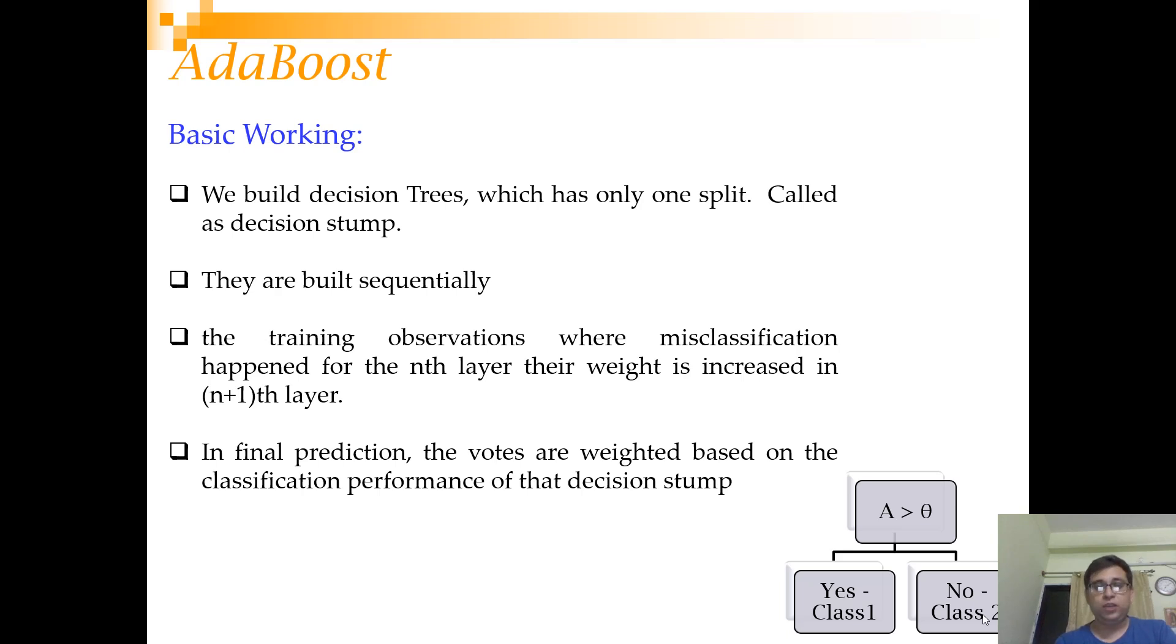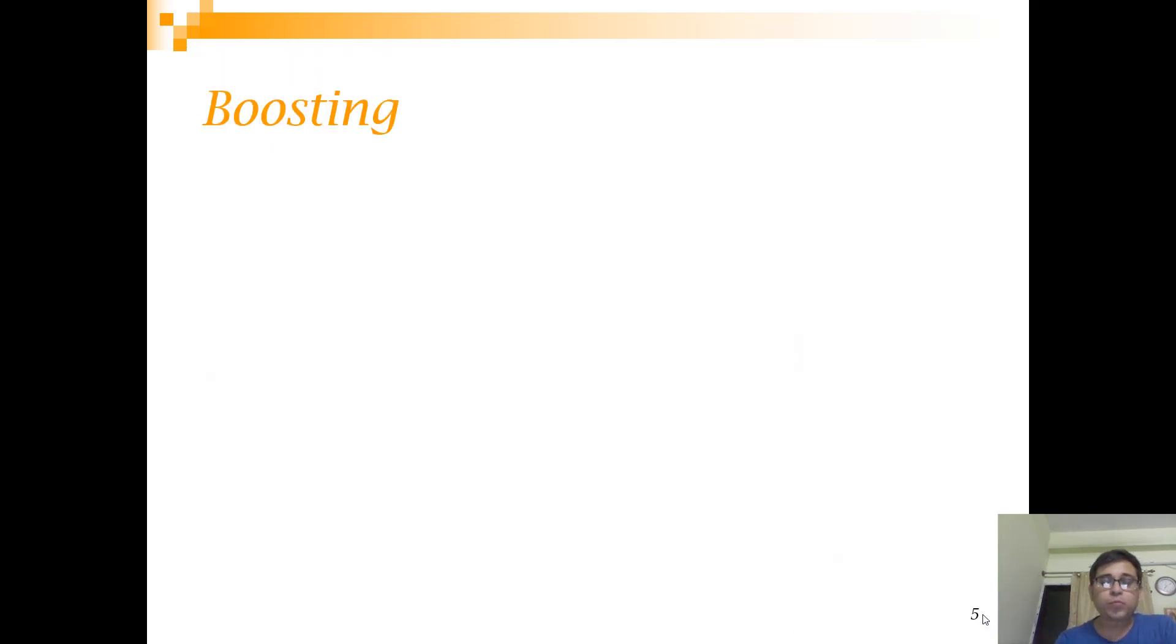They are built sequentially. So one decision stump is made, that result is inspected, then the next stump is built. The training observations where misclassification happened for the nth stump, their weight is increased in the n+1th layer, so that this tree is more observant on not making errors that were made in the previous layer. In the final prediction, the votes are weighted based on the classification performance of the decision stump. So it's also a soft voting scheme, not a hard voting scheme.